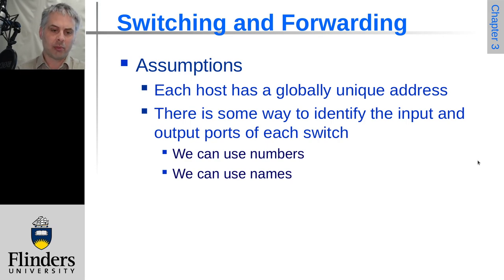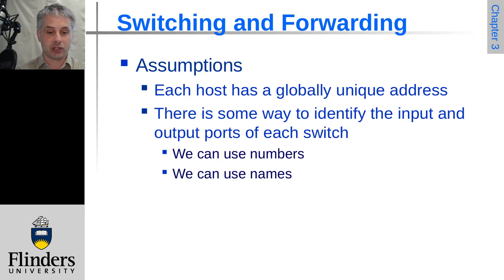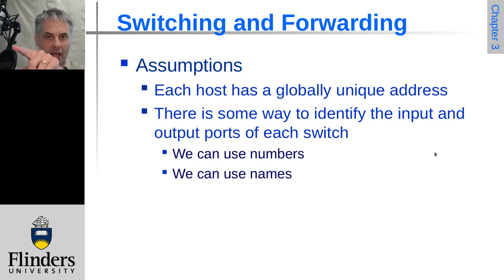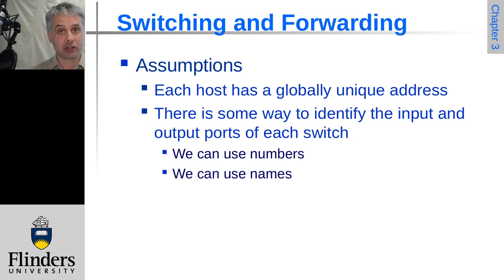This process makes several assumptions. First, each host and each device on the network has to have a globally unique address so that we can actually switch towards it. We also have to have some way to identify which are the input and output ports on the switches — that could be name-based or number-based. Each port on an ethernet switch has an input channel and an output channel because it's a bi-directional link, though not all links are necessarily bi-directional.